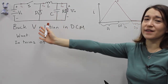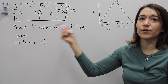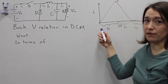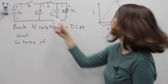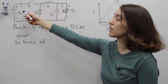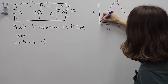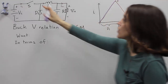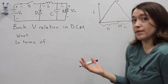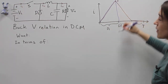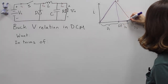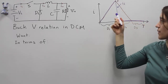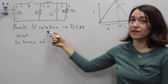Valerie is helping us out at the input of our buck converter, and from her view, the current she sees is the input current. So let's draw the input current here as well. When the switch is on during D1, the inductor current and the input current are the same — Valerie at the input is seeing this current. But when the switch opens, there's no current flow, so the current during D2 and D3 will just be zero. That is our input current.